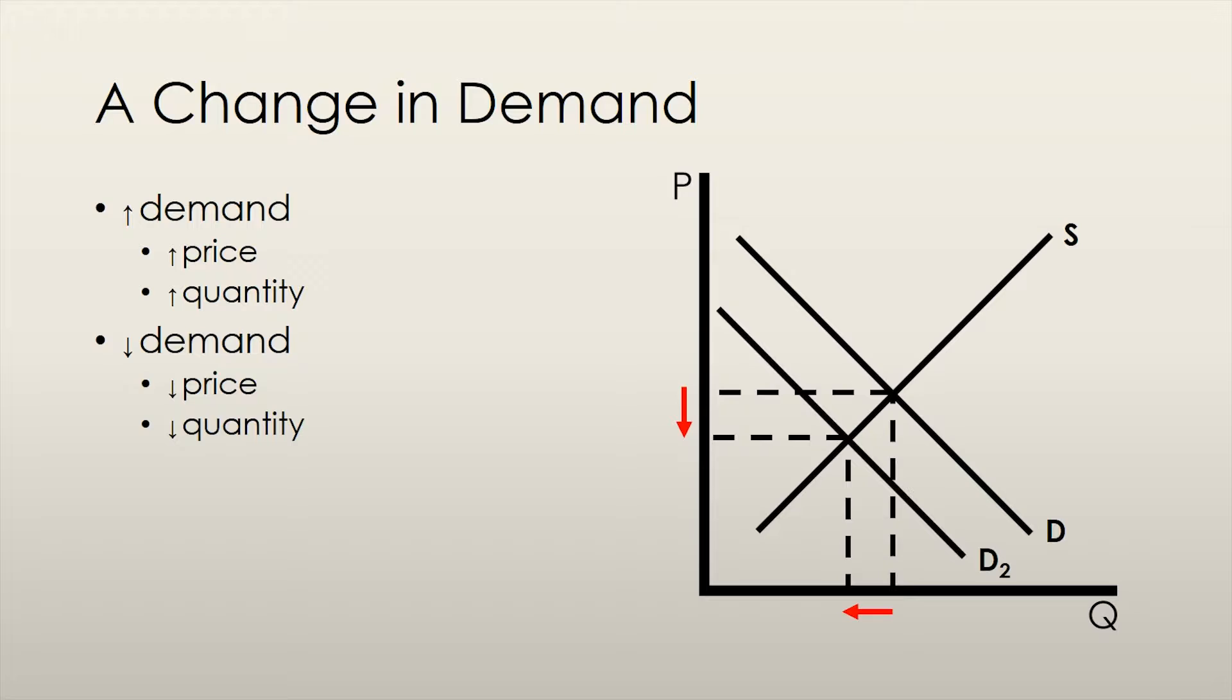Conversely, if demand decreases, then the exact opposite happens. The new demand curve, D2, intersects the supply curve at a lower price point and a lower quantity. Thus, the equilibrium price falls and the equilibrium quantity falls.